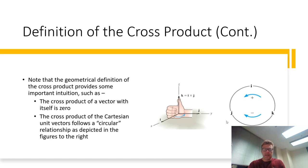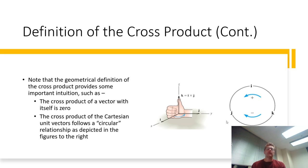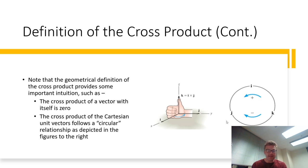From that geometric definition of the cross product, you can get some easy rules of thumb. Particularly, if two vectors are parallel, the cross product will be zero. That means the cross product of any vector with itself or a scaled version of itself will be zero.